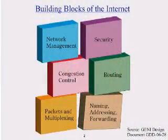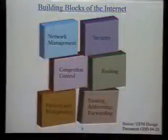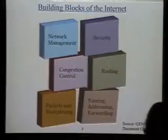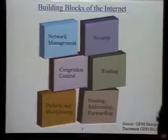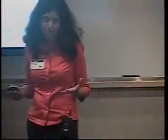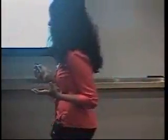Our internet is a large distributed shared infrastructure, and if you look above all the plumbing — the protocols, the mechanisms, and algorithms — it essentially boils down to six key components: packets and multiplexing, naming, addressing and forwarding, routing, security mechanisms, network management, and finally, congestion control. My talk is going to be about one of these crucial building blocks: congestion control.